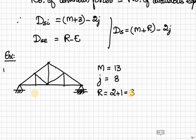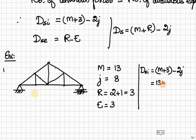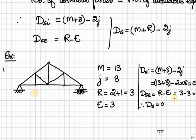Now, just we can apply the expression for indeterminacies. Dsi is equal to M plus 3 minus 2J, which is equal to 0. Then, Dse is equal to R minus E, which is equal to 0. Therefore, this structure is statically determinate, externally and internally.